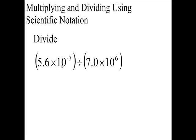Divide 5.6 times 10 to the negative 7. I want you to divide that by 7.0 times 10 to the 6. So, copy this down as your numerator, and this is your denominator.